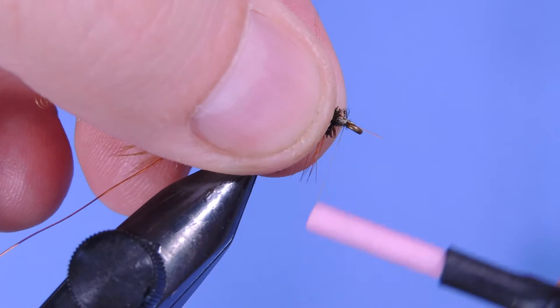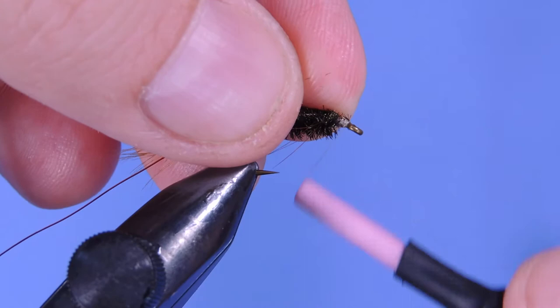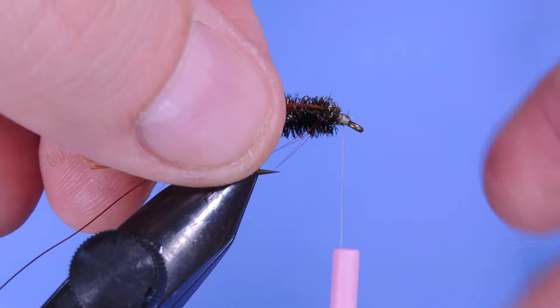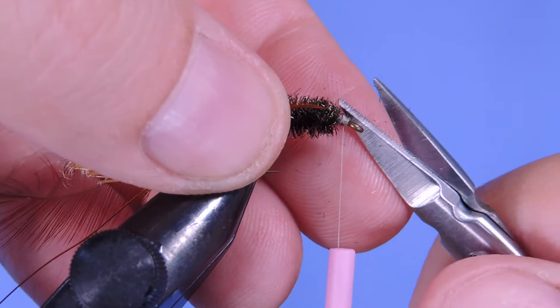Tie those in, and then I just fold that stem back just so that it's really locked in place. It's not going to come loose. Trim that piece of stem off there.